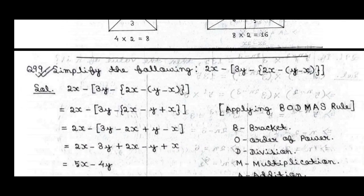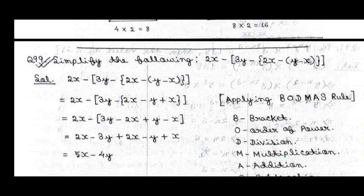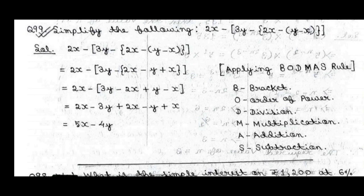Next, we need to simplify the following: 2x minus 3y minus 2x minus y minus x. So first bracket, second bracket, third bracket apply. Here is the formula — BODMAS: both mean bracket, order of power, division, multiplication, addition, subtraction. Solving step by step gives us 5x minus 4y.